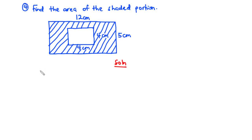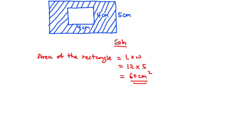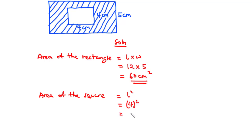The area of the rectangle equals length times width, which is 12 times 5 equals 60 centimeters squared. The area of the square equals L squared, where L equals 4 centimeters, so 4 squared equals 16 centimeters squared.